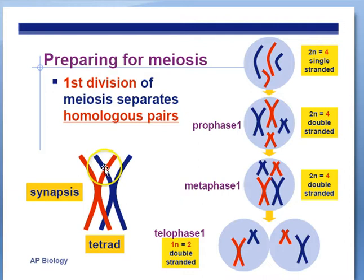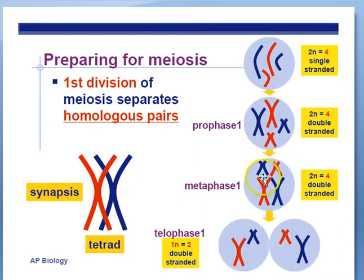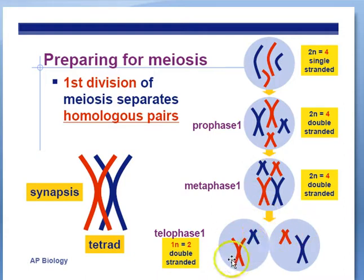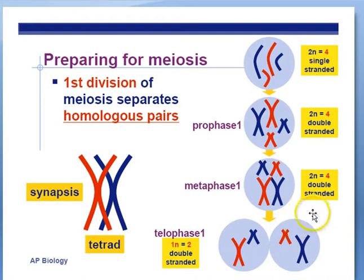Synapsis is a verb describing the event of swapping little pieces of DNA, which is going to increase the genetic diversity of the cells being produced. During metaphase I, we have the homologous chromosomes paired up. Then during anaphase I, we separate out those chromosomes. During telophase I, the chromosomes are in their own cell, and cytokinesis will divide that cell into two.